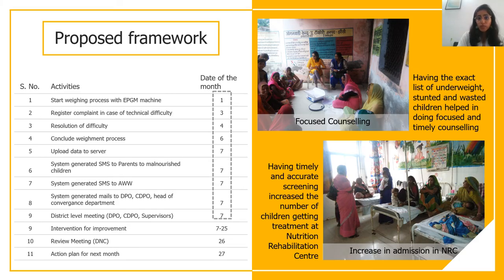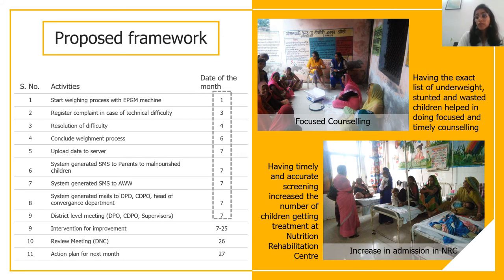We realized that with this system, we could complete the entire screening with accuracy within the first seven days of every month, leaving the remaining three weeks for frontline workers for focused intervention and reviews, resulting in a better organized system. With a clear list of SAM children, referrals to NRC increased and we could do focused counseling for each individual.